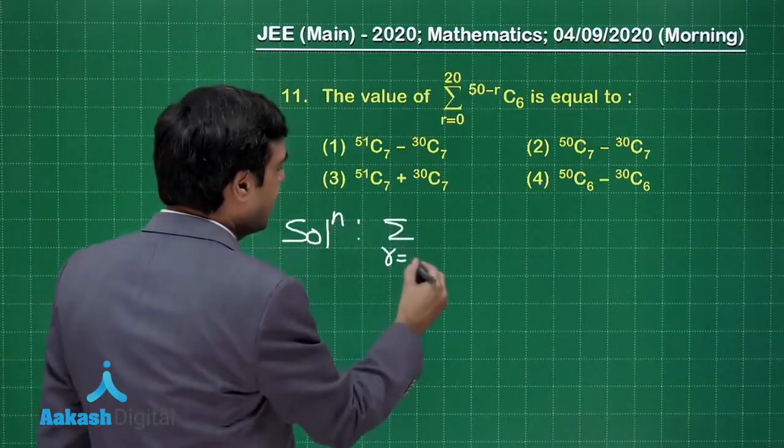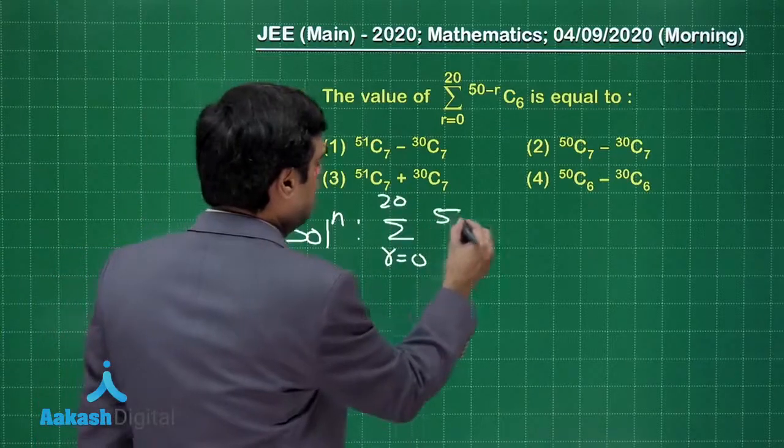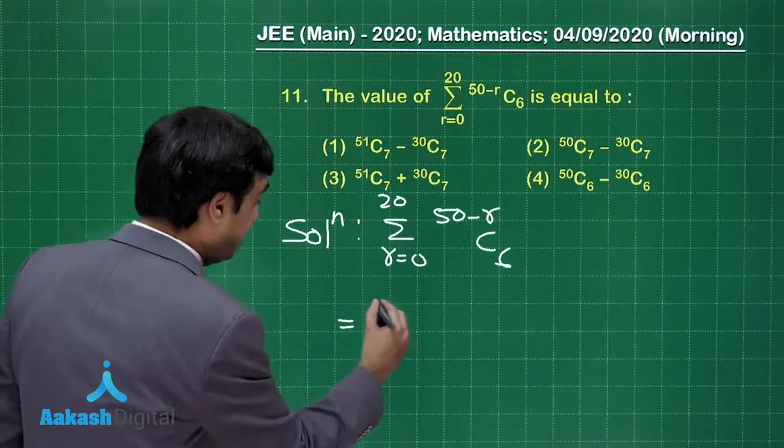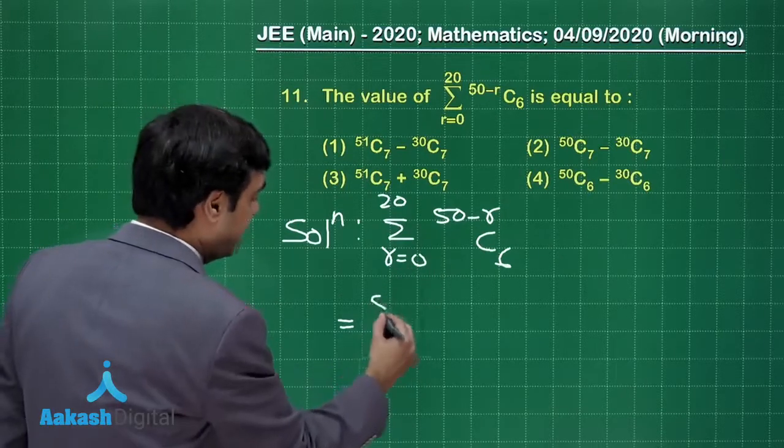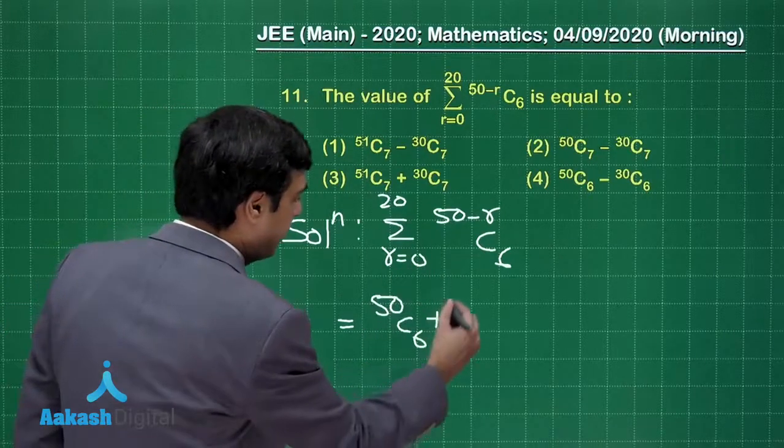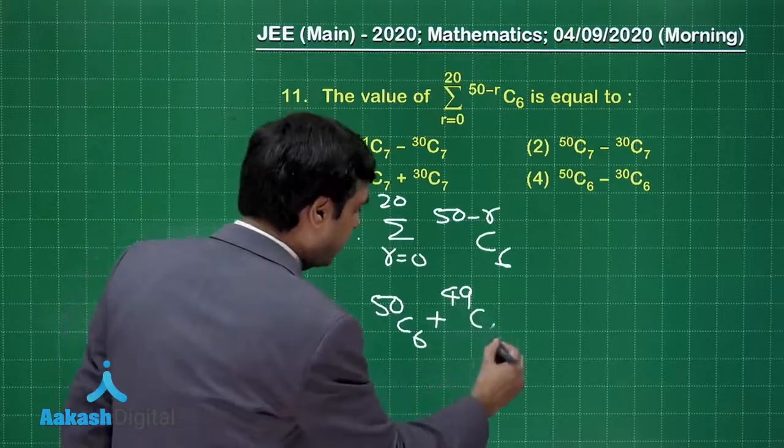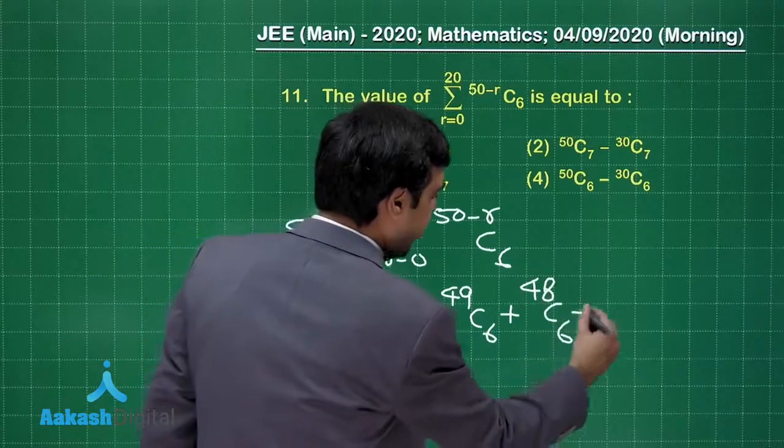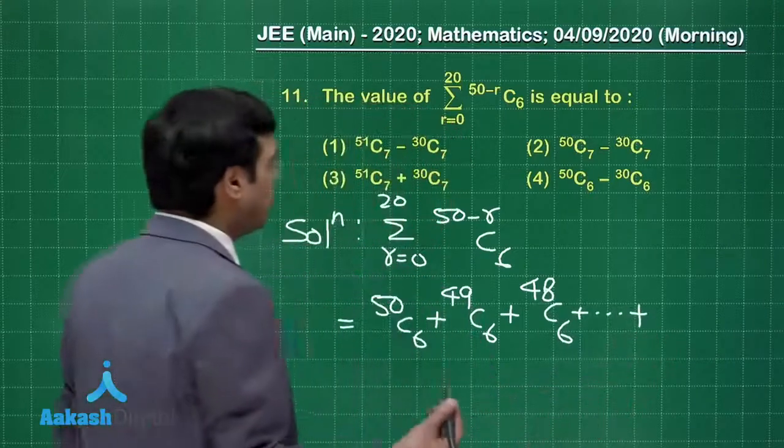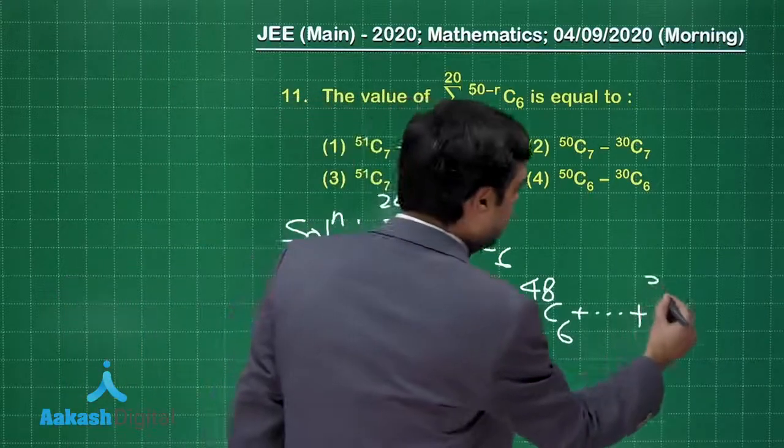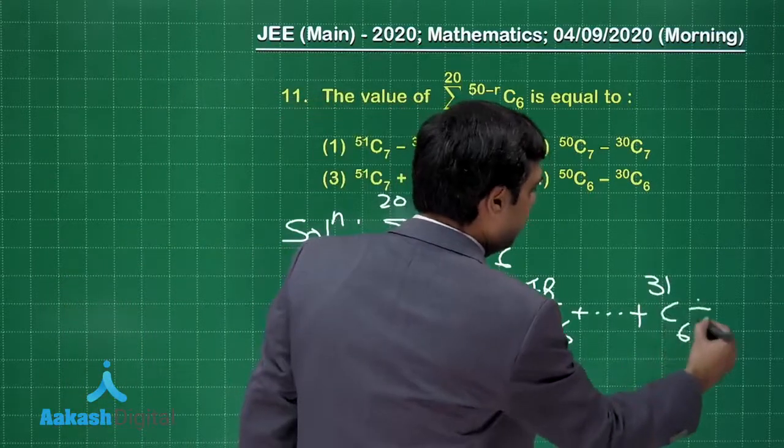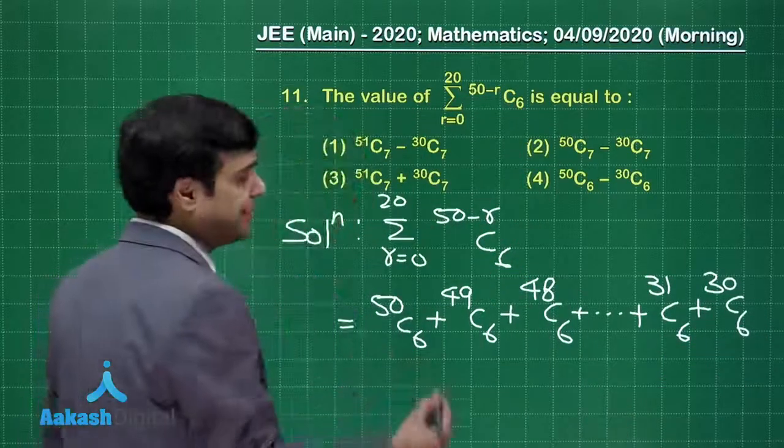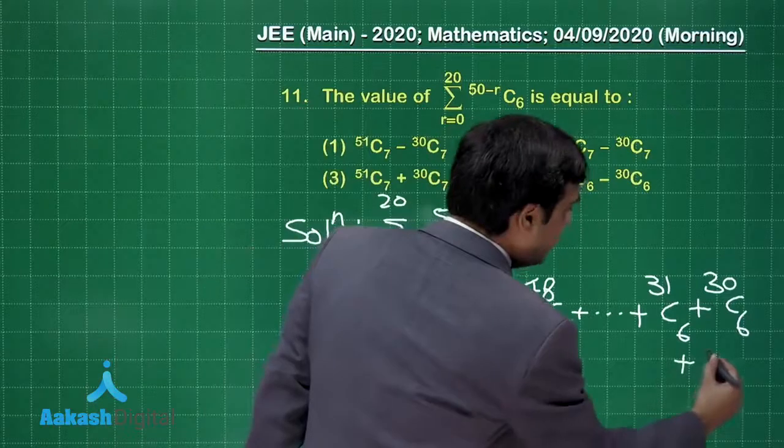Summation r equals 0 to 20 of 50 minus r C 6. That means when you put 0 it is 50 C 6, plus then next is 49 C 6, 48 C 6, and so on. When you put 19 you will be getting 31 C 6, and for the last it is 30 C 6.